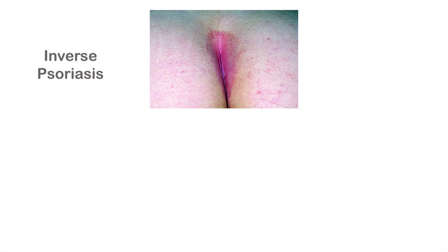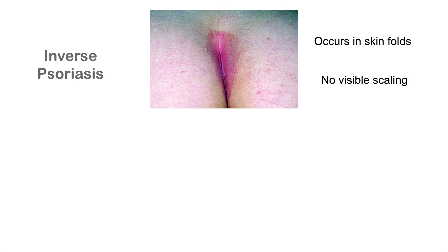Inverse psoriasis occurs in skin folds and has no visible scaling. It is called inverse because it is essentially the opposite of plaque psoriasis — it lacks the silver scale and occurs in skin folds rather than on extensor surfaces.